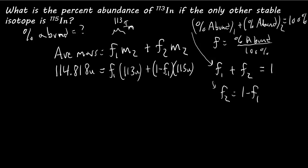So, there we go. We now have an average mass. We now have the fractional abundances, all in terms of just one number, this F1. So, now we can solve for F1. 114.818 u equals 113 u F1, plus, now we'll expand this, 115 u minus 115 u F1.